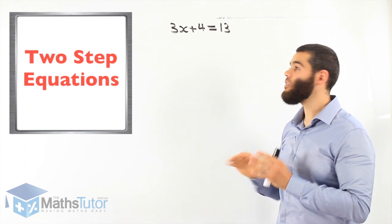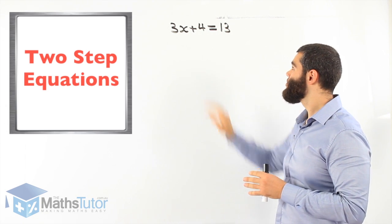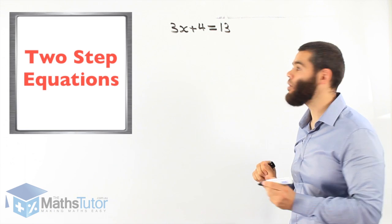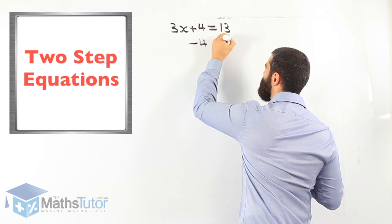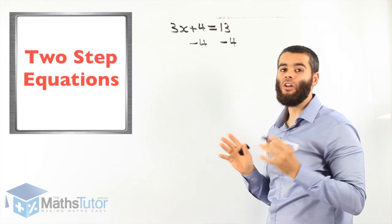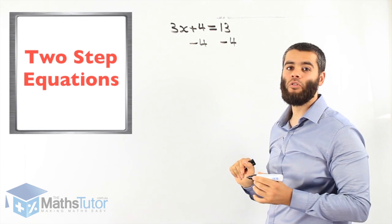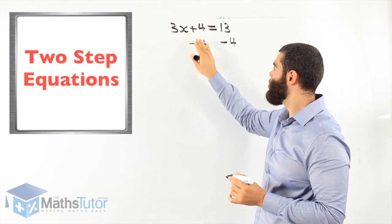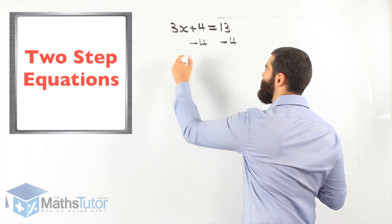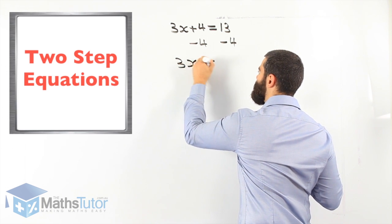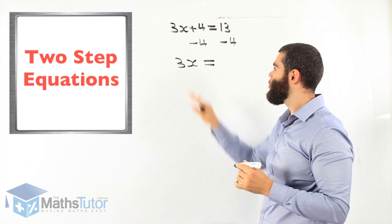Always start with the furthest numeral away from x and then move closer towards x. Here we have positive 4 — that's the furthest one away. So positive 4, we subtract 4, and of course we subtract 4 on the other side. We learned in equations: what we do to one side, we must do to the other side. Plus 4 becomes minus 4. We always do the opposite.